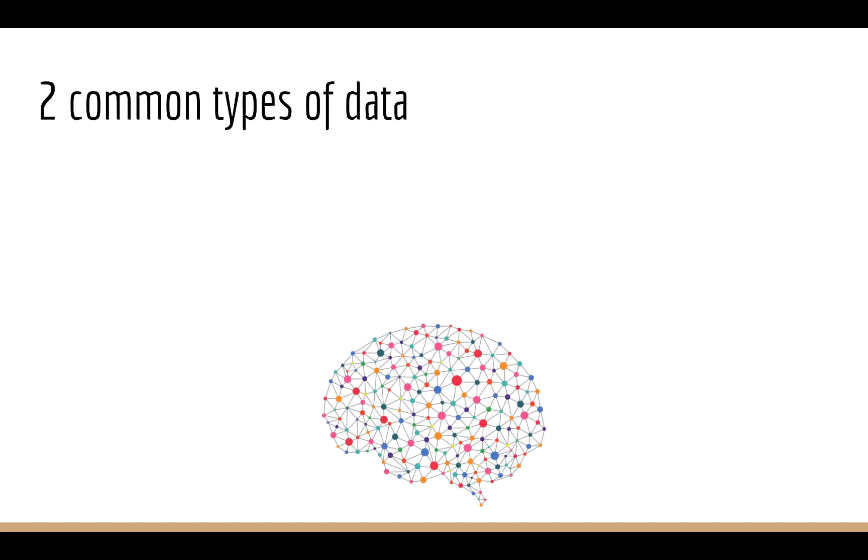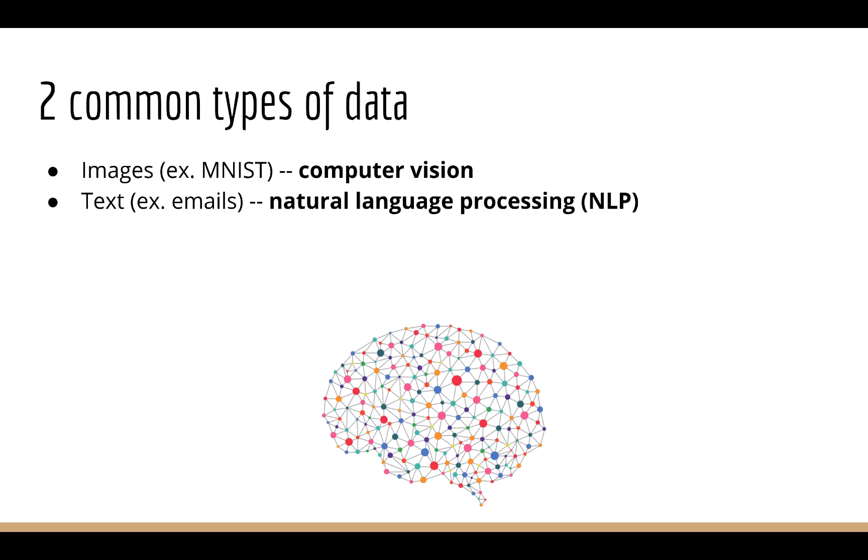In machine learning, what you'll often find is that there are two types of data that we're constantly working with. With MNIST, we're working with images. Images generally fall under the field of computer vision. It's called this because you're teaching a computer to be able to intelligently process images. The other common data format we work with in machine learning is text. Text is everywhere, just like images. In fact, you can think of the entire internet as just being made up of images and text.